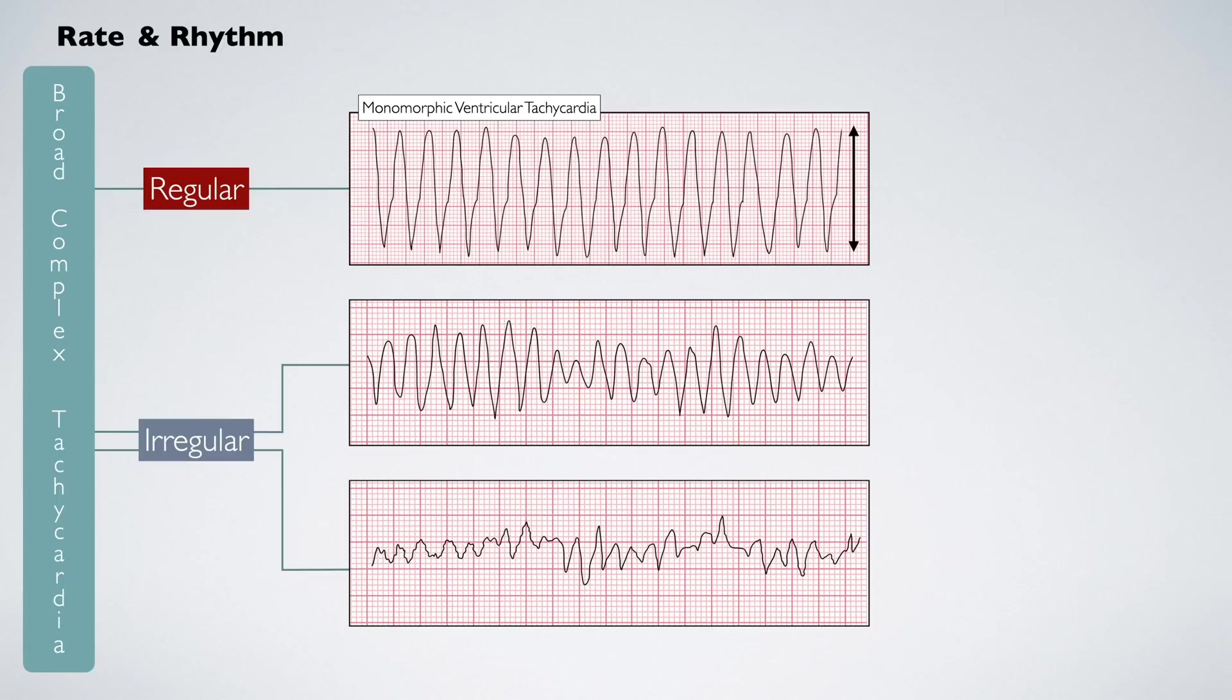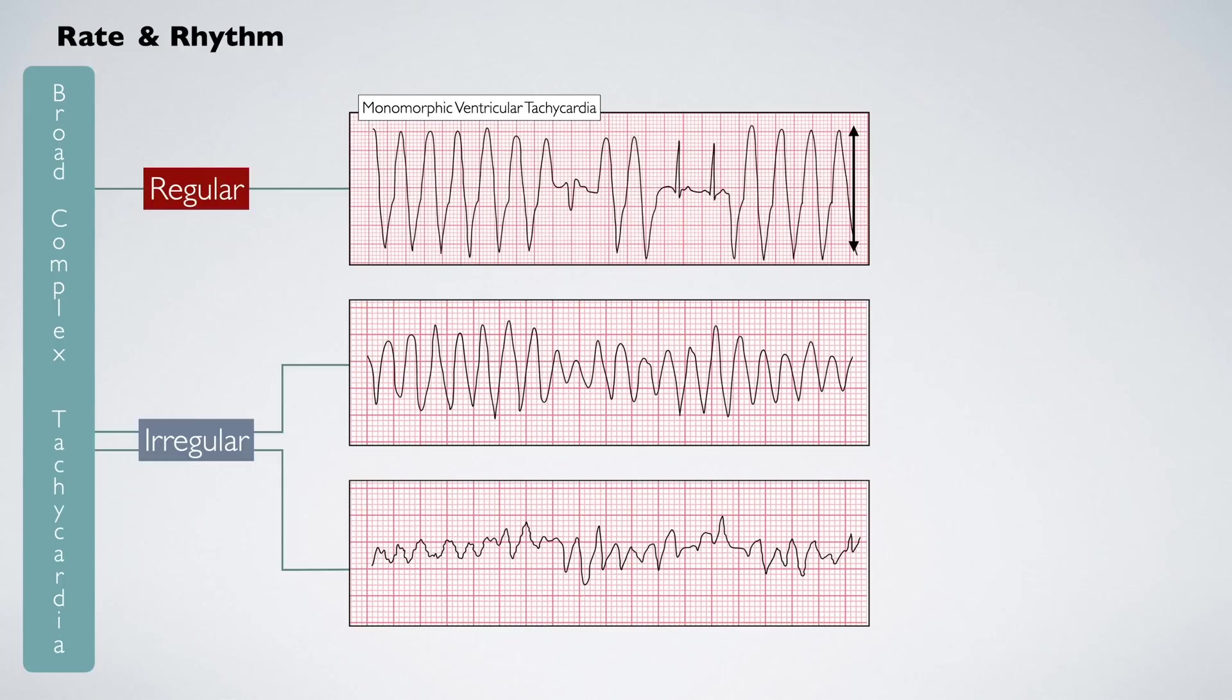Note however that some rhythms can mimic this. It is useful to identify specific features only present with ventricular tachycardia. Look for fusion beats. These occur when supraventricular and ventricular impulses collide to produce a hybrid complex. Also look for capture beats. These occur when occasional atrial impulses reach the ventricles when not refractory, leading to a capture of sinus rhythm.